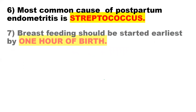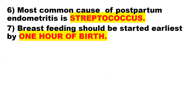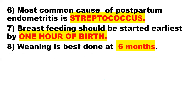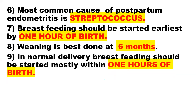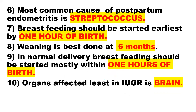Point 7: Breastfeeding should be started earliest within one hour of birth. Point 8: Weaning is best done at 6 months. Point 9: In normal delivery, breastfeeding should be started mostly within one hour of birth.